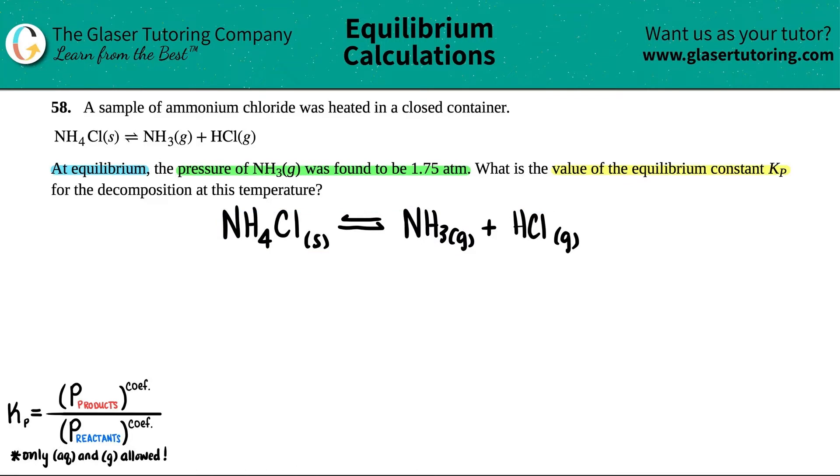They told us we started with a sample of ammonium chloride, which is NH4Cl. Then they said at equilibrium the pressure of NH3 was found to be 1.75 atm. So we know information for this one, but we don't really have any other information for these. There's a couple of ways to work through this problem. I'm going to try to give you the most concise information to answer this.